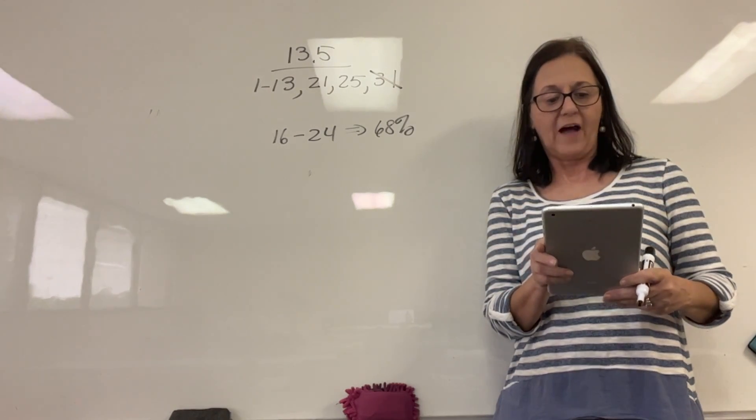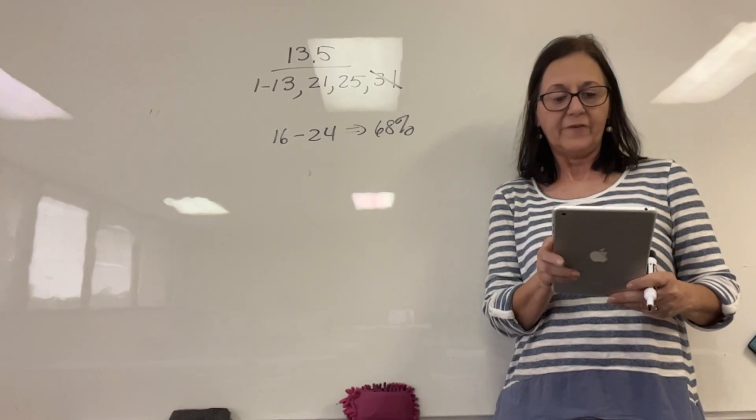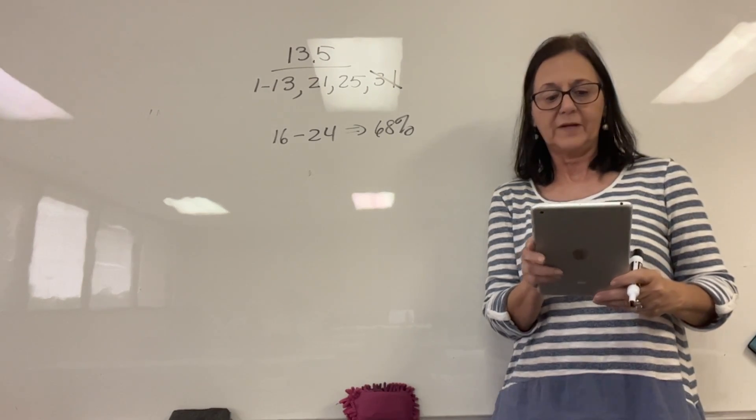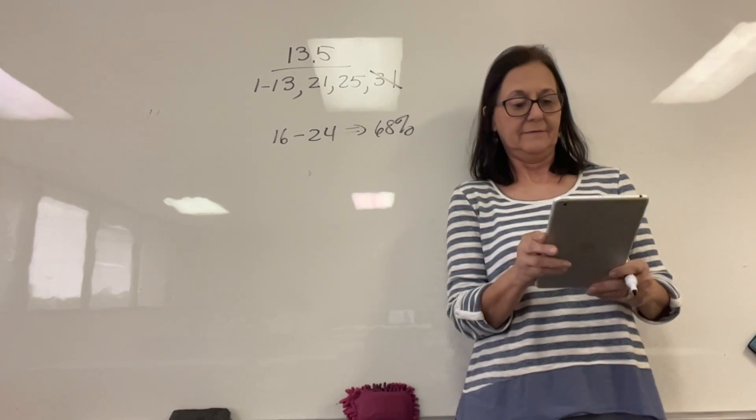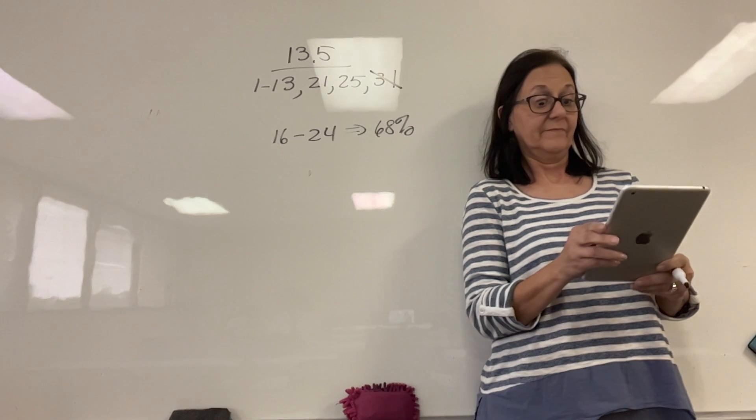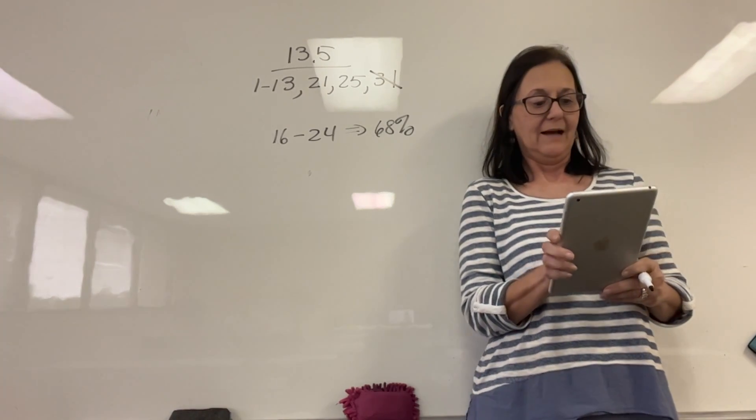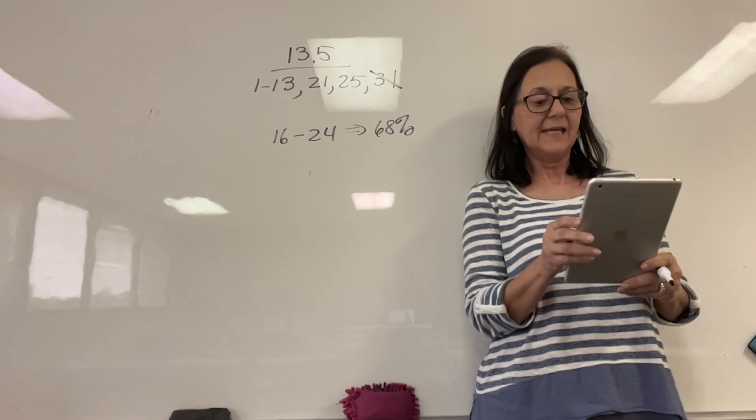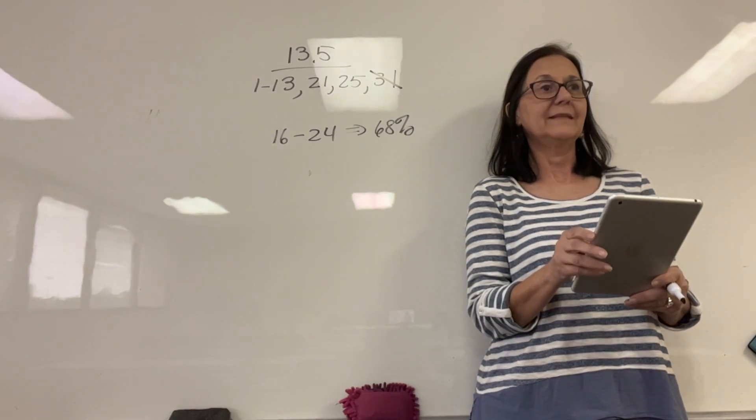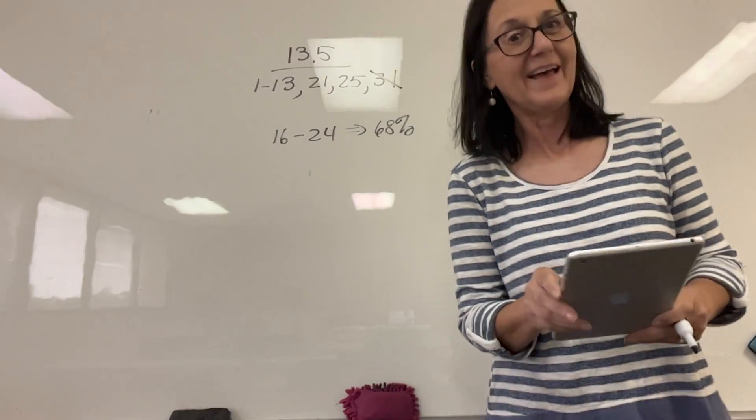Now it says five. Let's do 12 to 28. What's 12 to 28? 95%. What would be 8 to 32? 99.7. Excellent.